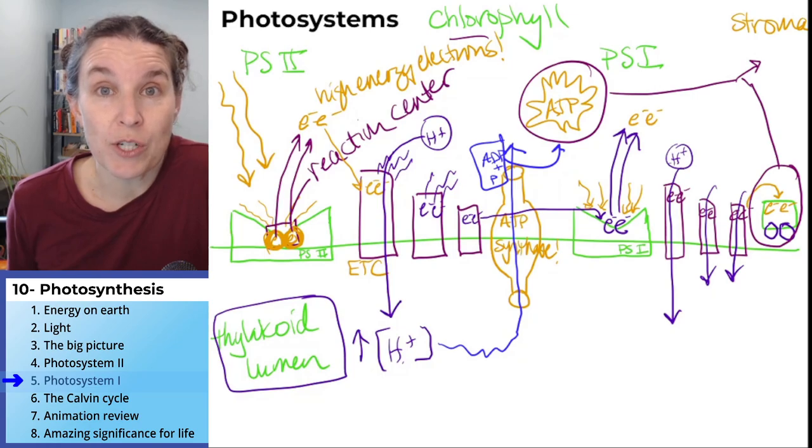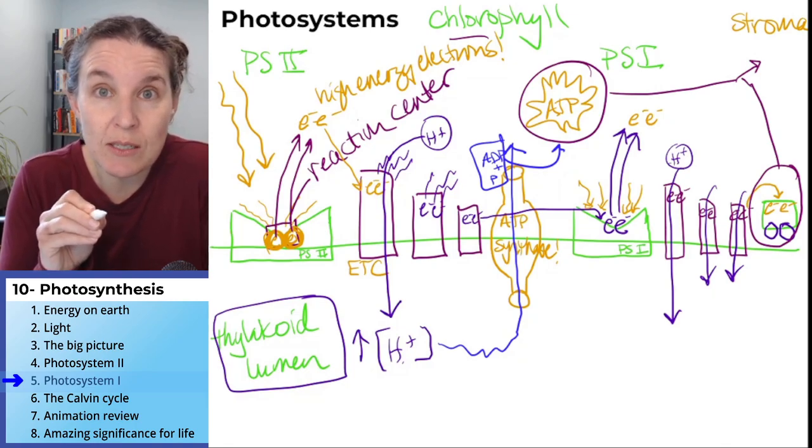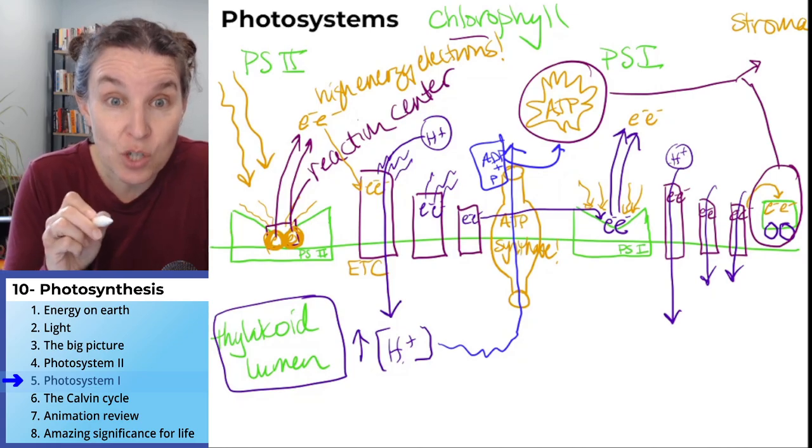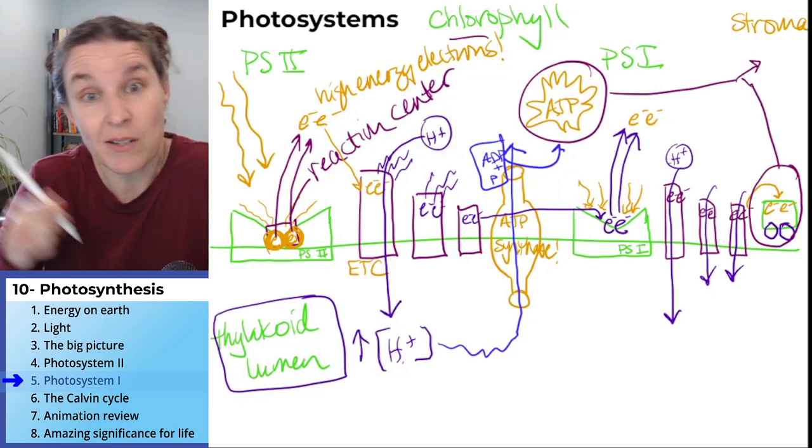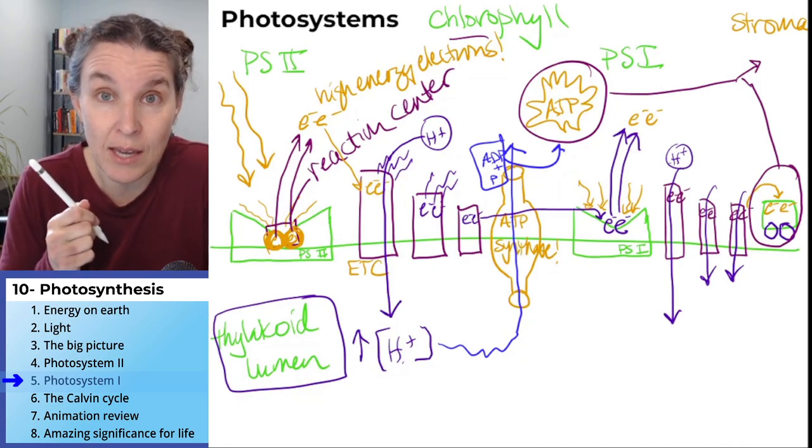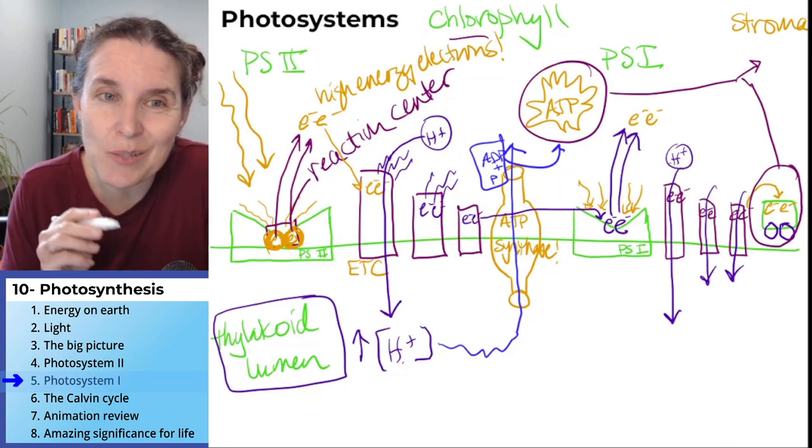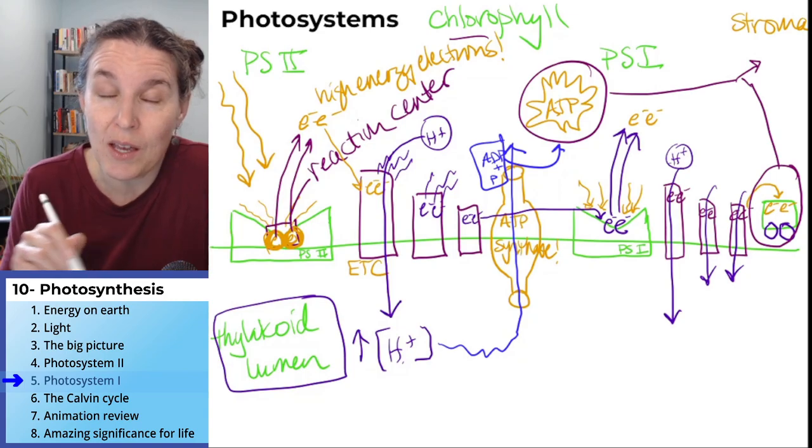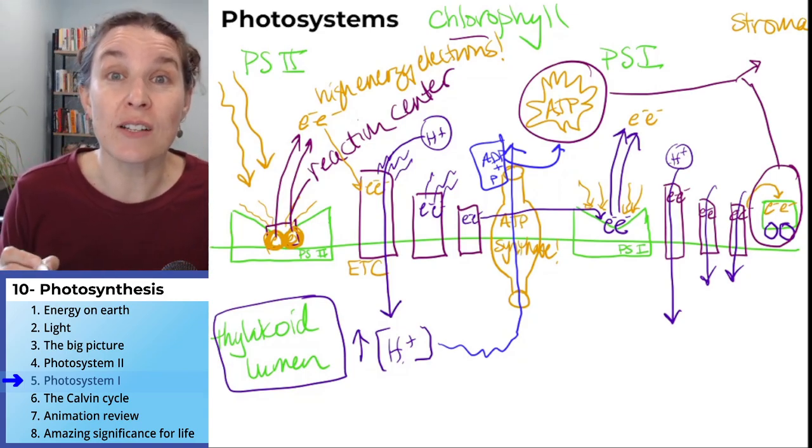We've got a very important job. We have to replace - we took the electrons from photosystem 2 and gave them to a high energy electron carrier to go do some work in the Calvin cycle. We're done unless we replace those electrons in photosystem 2.